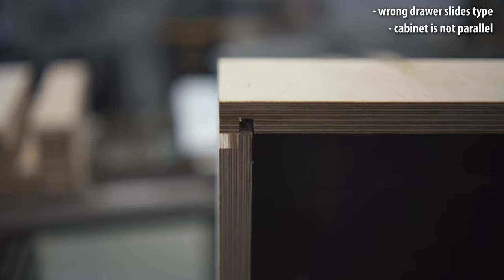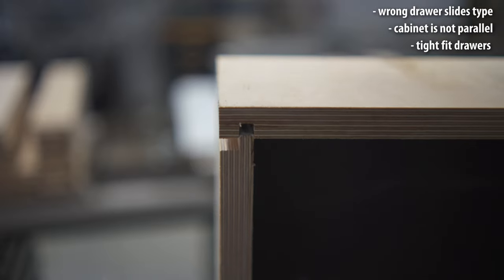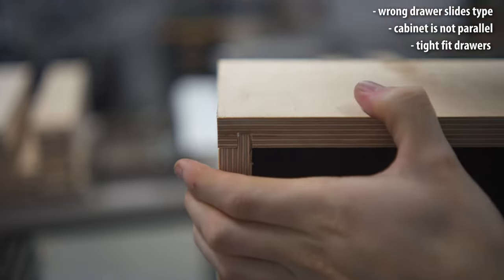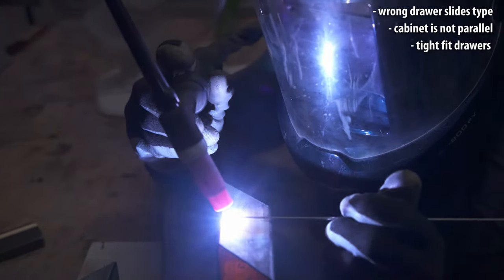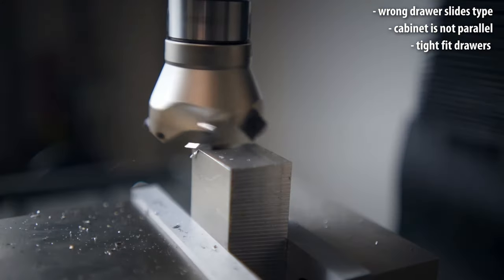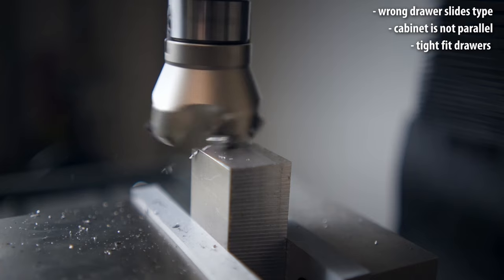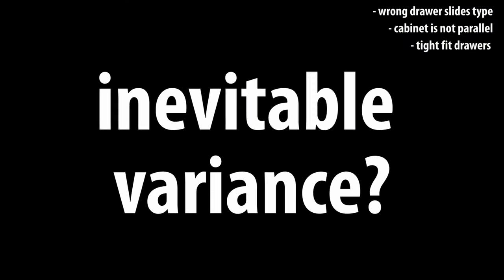Mistake number 3: building the drawers absolutely perfect. When building the cabinet and the drawers you will, like everybody else out there, screw or weld it together and won't CNC it out of a solid block of aluminum. To cut to the chase, there will be some inevitable variance.